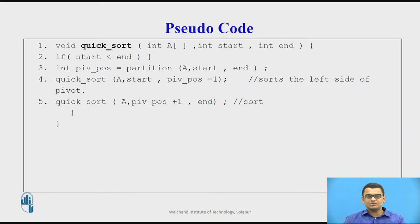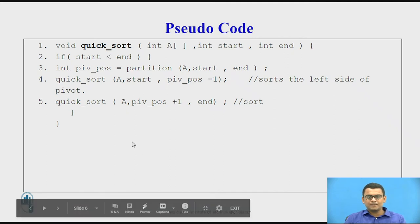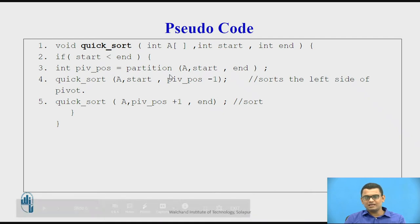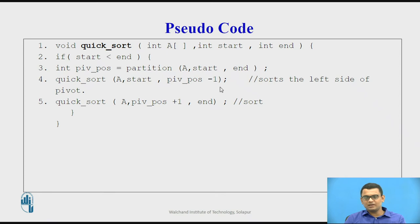This is the pseudo code where the pivot position is returned by the subroutine partition, and the quick sort algorithm is recursively called over the left sub-array and the right sub-array.